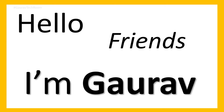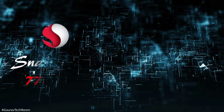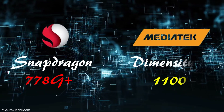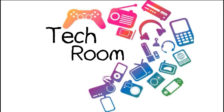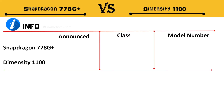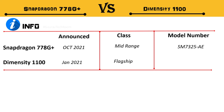Hello friends, I am Goro and today I am going to do a comparison of Snapdragon 778G Plus vs MediaTek Dimensity 1100. The announcement date of the Snapdragon is October 2021 and Dimensity is January 2021. Snapdragon is in the mid-range class and Dimensity is flagship class. The Snapdragon model number is SM7325AE and Dimensity model number is MT6891ZCZA.